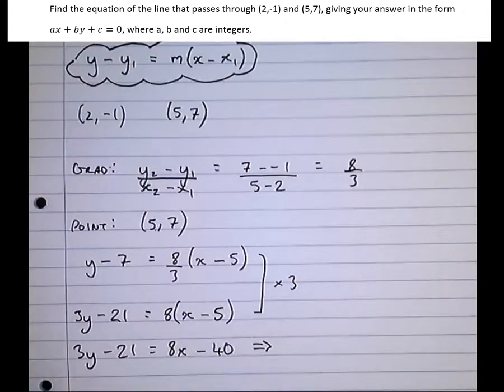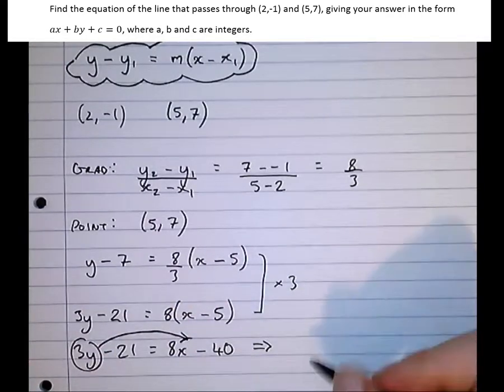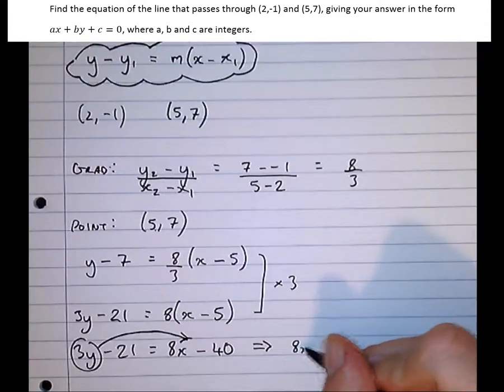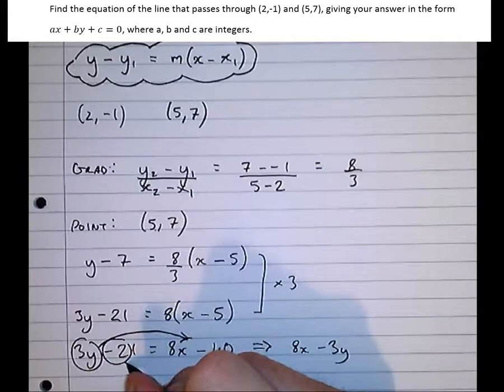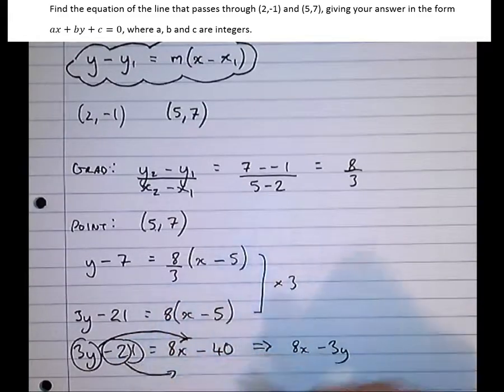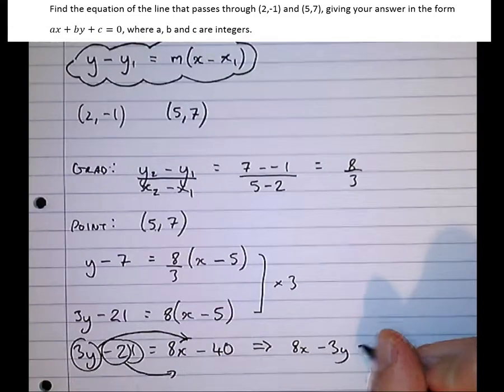So almost there. We just need everything over to one side now. So if we chuck that 3y across there, we end up with 8x minus 3y. Likewise, let's chuck that plus 21 across the other side. So minus 40 plus 21 is minus 19 equals 0.